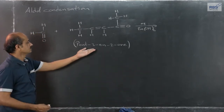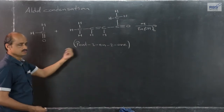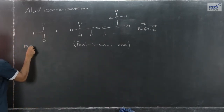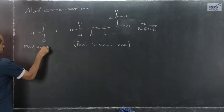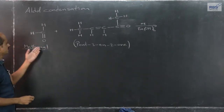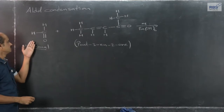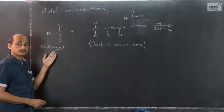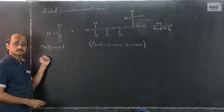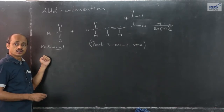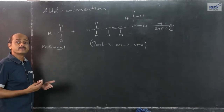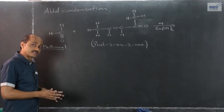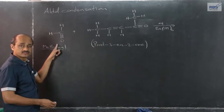Let us consider the reaction between these two. This is methanol and formaldehyde. Formaldehyde does not contain an alpha carbon atom, and therefore carbanion formation — which requires an alpha hydrogen atom — is a requirement for aldol. So the first step, where carbanion formation takes place, is not possible here.